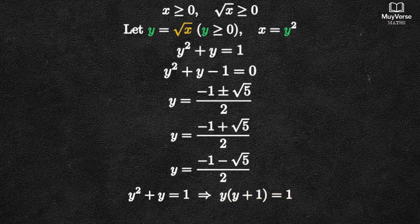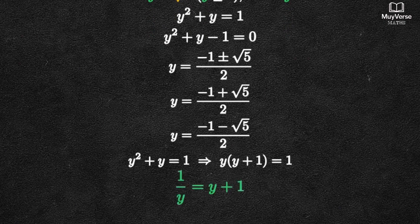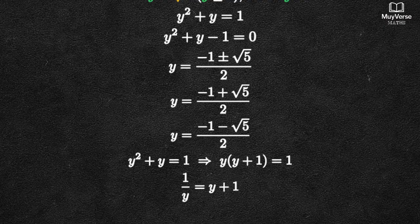As y times quantity y plus 1 equals 1. Divide both sides by y, which is non-zero here, and we get 1 over y equals y plus 1.